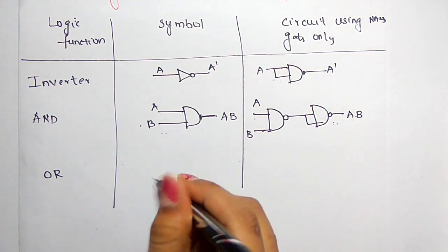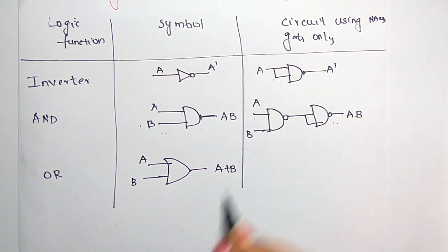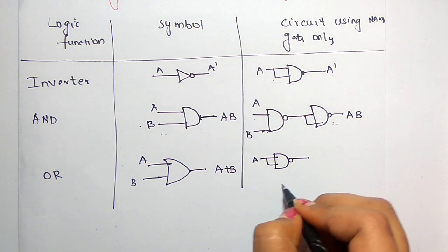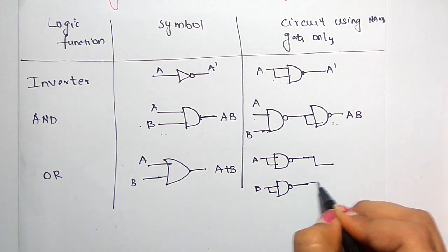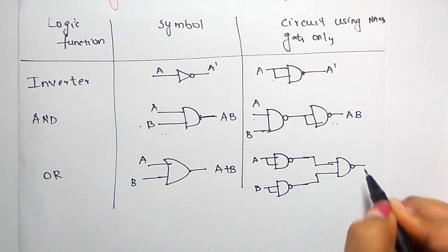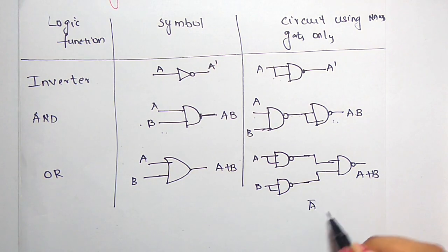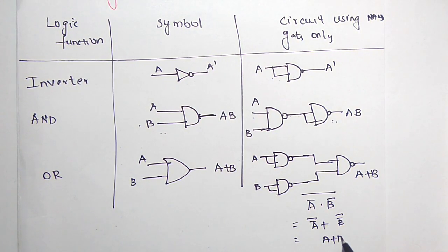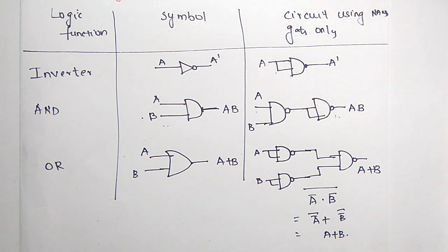Next is the OR logic function, with inputs A and B giving output A plus B. To implement OR using NAND gates, take one NAND gate for A and one NAND gate for B to get A bar and B bar. Then give A bar and B bar to a third NAND gate. Applying De Morgan's theorem, A bar B bar whole bar equals A bar complement plus B bar complement, which equals A plus B. This is how you can implement any logic function using only NAND gates, which is why it is called a universal gate.